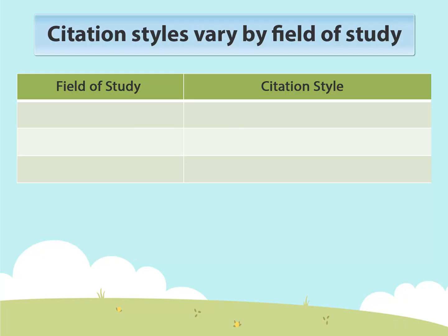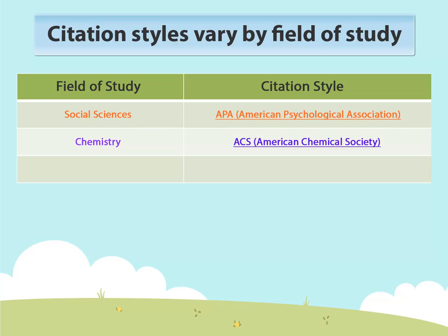For example, social sciences often uses APA style, chemistry may use ACS style, and humanities often uses MLA style.